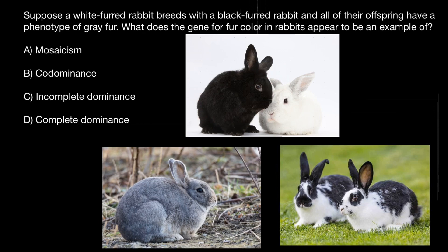So this rabbit produces pigment and this one doesn't. Sometimes it happens that when a rabbit has some hairs black and other hairs white, we perceive it as a gray rabbit. Or in another scenario, we may see that the rabbit just doesn't produce enough black pigment, and in this case we perceive it as gray. So this is an example of incomplete dominance.